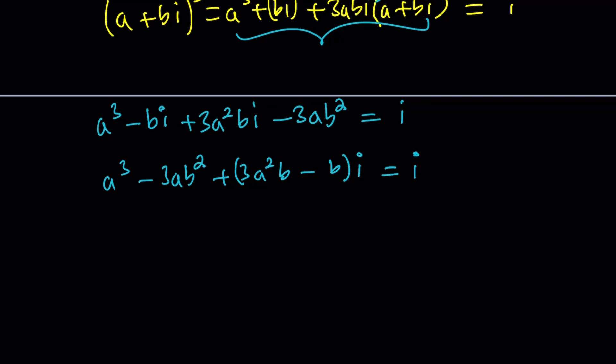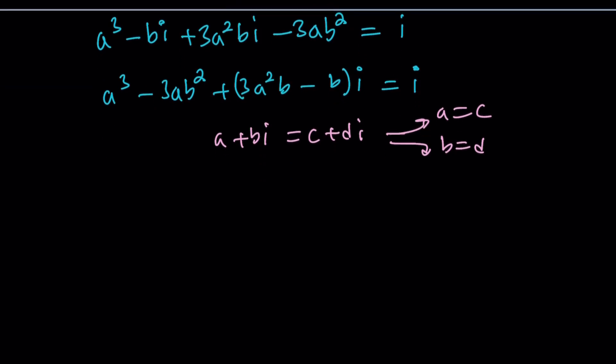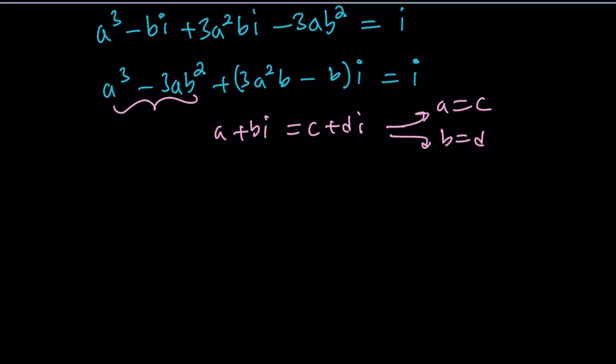So when two complex numbers are equal, what do we say? For example, if A plus B I is C plus D I, then A equals C and B equals D. It's kind of like a two-dimensional thing. From here, we get that the real part of this complex number I is zero because it's imaginary, and the imaginary part is supposed to be one. So we get a system of equations.